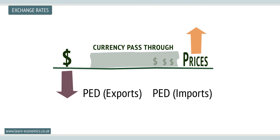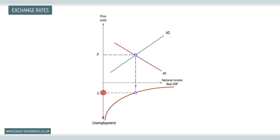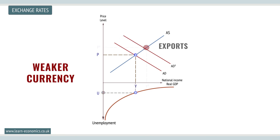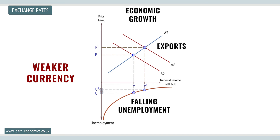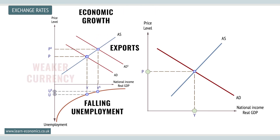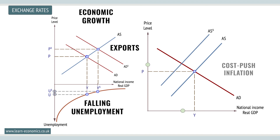Given that exports are a key part of aggregate demand, exchange rates can affect national income, with a weaker currency stimulating export sales, jobs, and growth. However, the exchange rate also affects the supply side of the economy, with a weaker currency increasing import prices, leading to cost-push inflation.